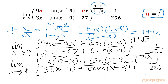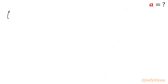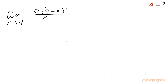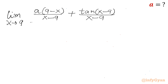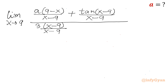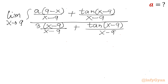Now I will divide the numerator and denominator by (x − 9). So limit x tending to 9 of: a times [(9 − x)/(x − 9) + (tan x − 9)/(x − 9)] over 3 times [(x − 9)/(x − 9) + (tan x − 9)/(x − 9)], raised to the power 1 + √x.